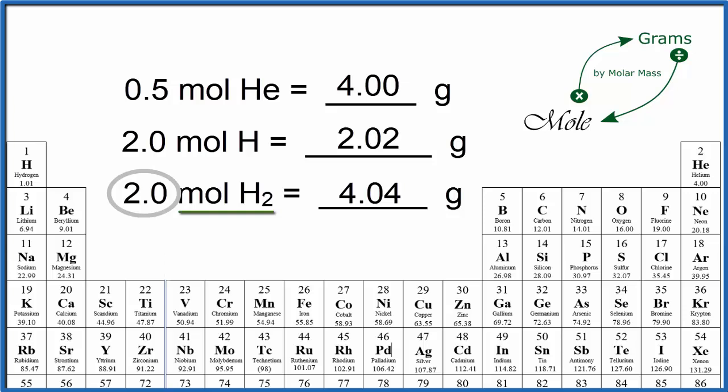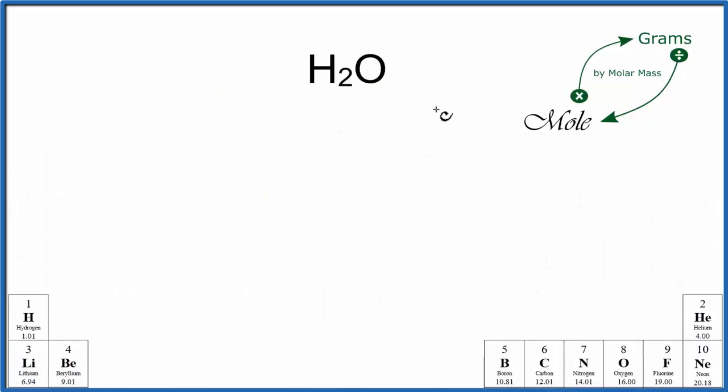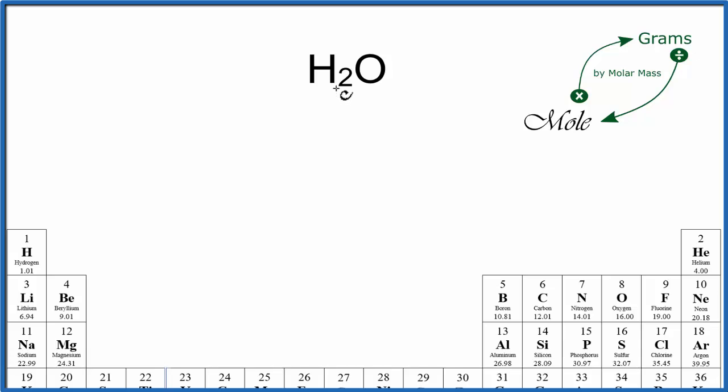So this brings up molecules or compounds. How do we find the molar mass for something like H2O? To find the molar mass for H2O, we just go to the periodic table, and we look up each element. We find its molar mass, and then add them together.